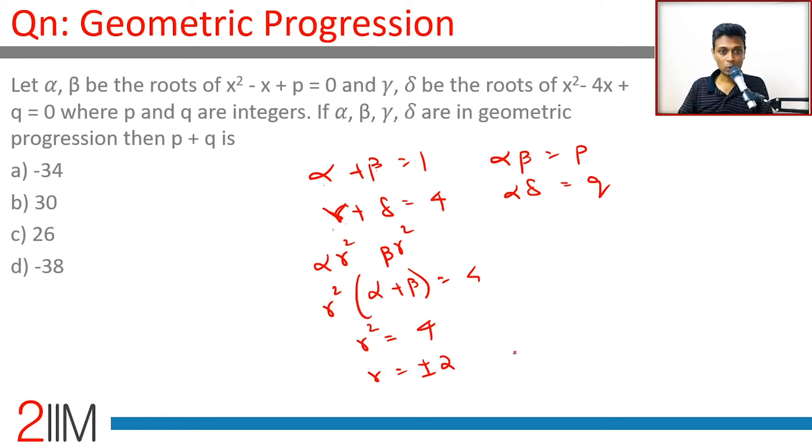So the roots of this equation - sum of the roots is 1. So we are either talking about alpha plus 2 alpha equals 1, or alpha minus 2 alpha equals 1. One of the two.